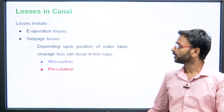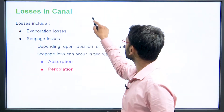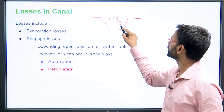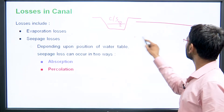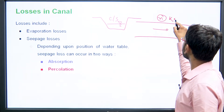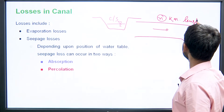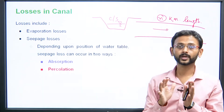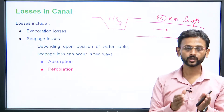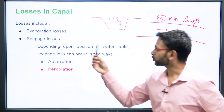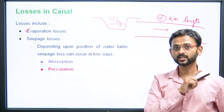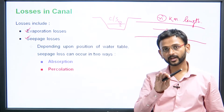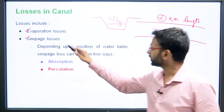Now let us talk about losses in the canal. A trapezoidal section canal of some length stores a certain volume of water — in a way it is like a reservoir but in a more confined area. Two types of losses occur: first is evaporation loss, same as discussed in reservoir losses in earlier units. Second is seepage loss, which occurs when the lining of the canal is not there.